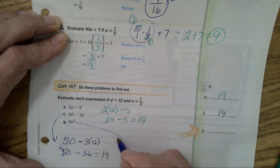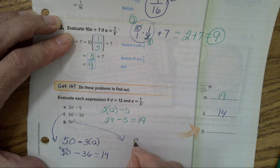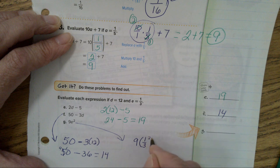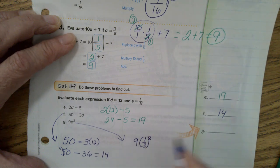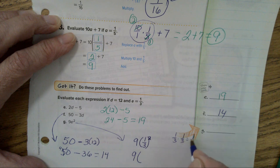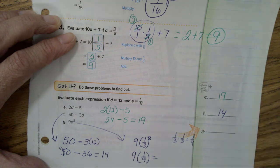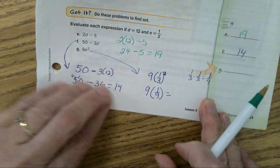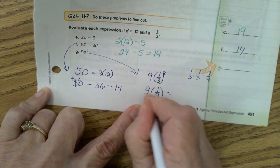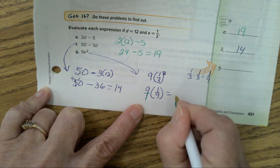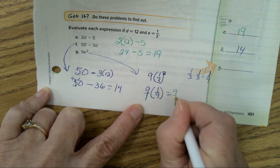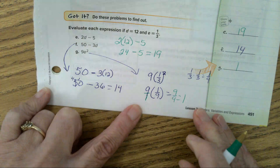Now, I'm going to do letter G over here. 9 times 1 3rd to the 2nd power. So, that's going to be 9 times 1 3rd times 1 3rd is 1 over 9. Well, that will, I'm going to gently pick the 9 up and put a 1 under it. And, that will be 9 over 9, which equals 1.